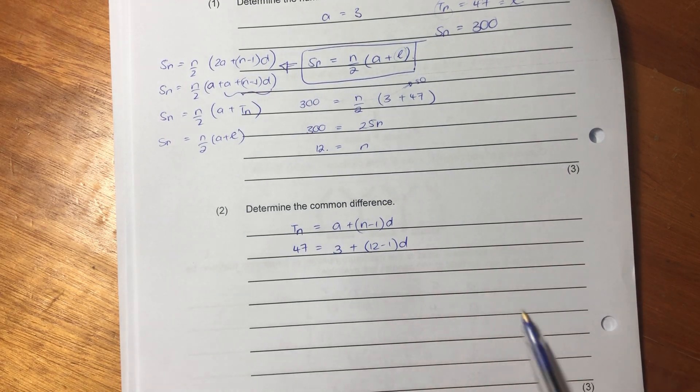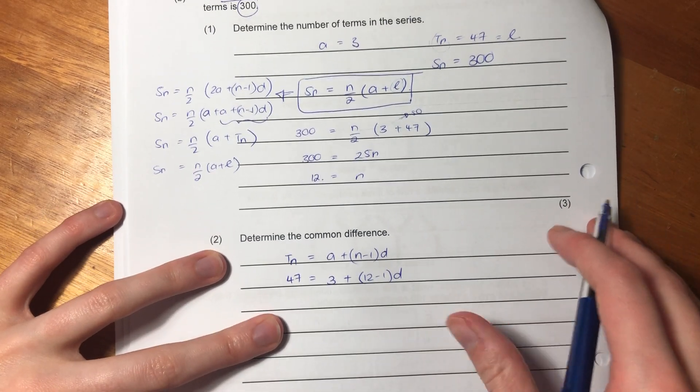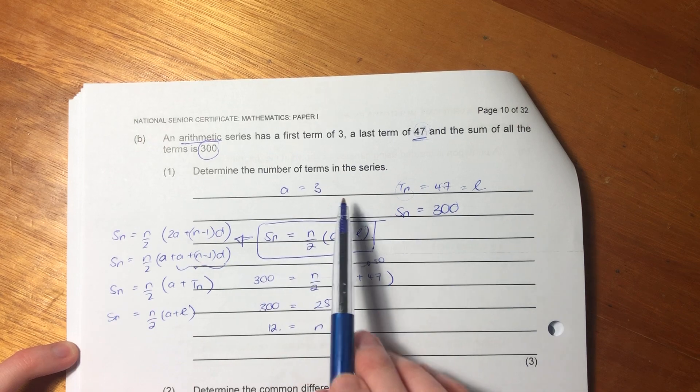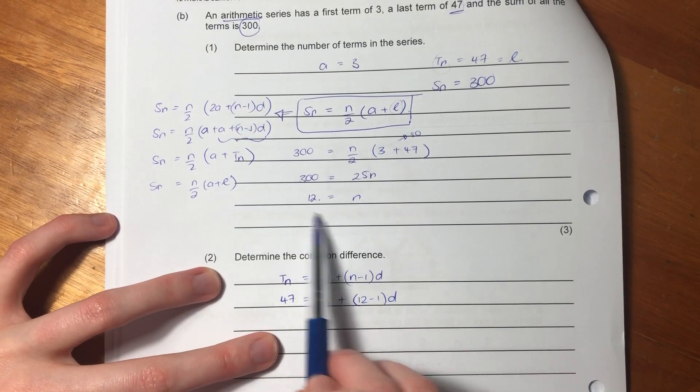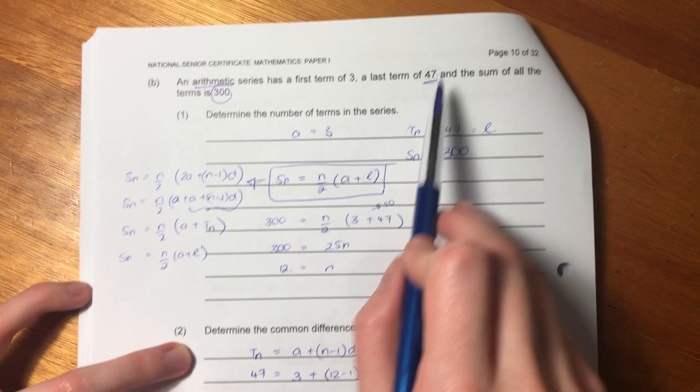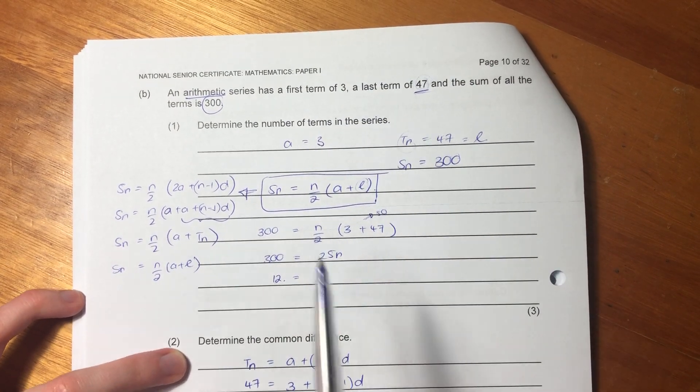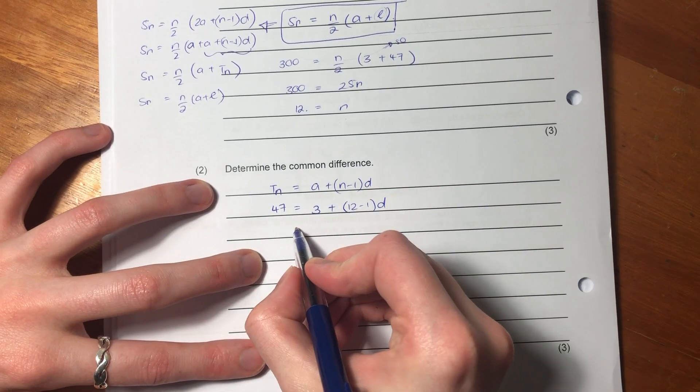So you might be thinking, okay, Margs, where does that all come from? Just remember, I've written it all over here. I've said A equals 3. We've determined that the last term, there's 12 terms, and they told us that the 12th term equals 47. So we're just subbing in all the information we have.